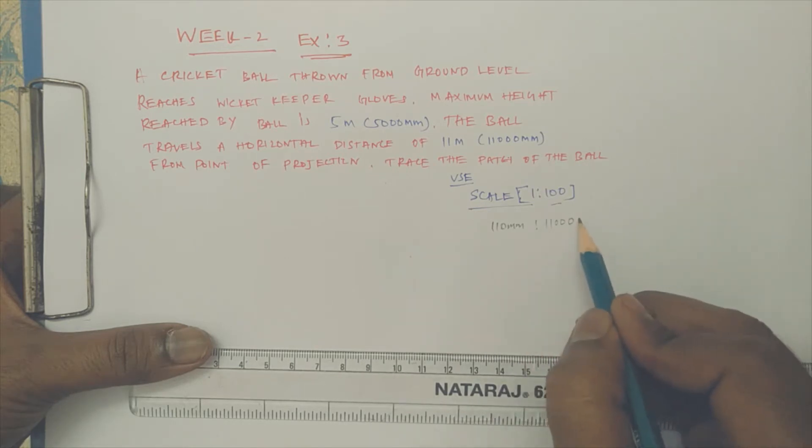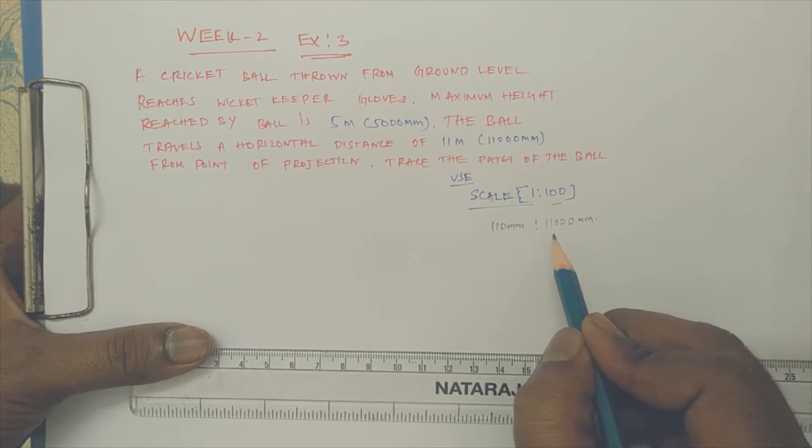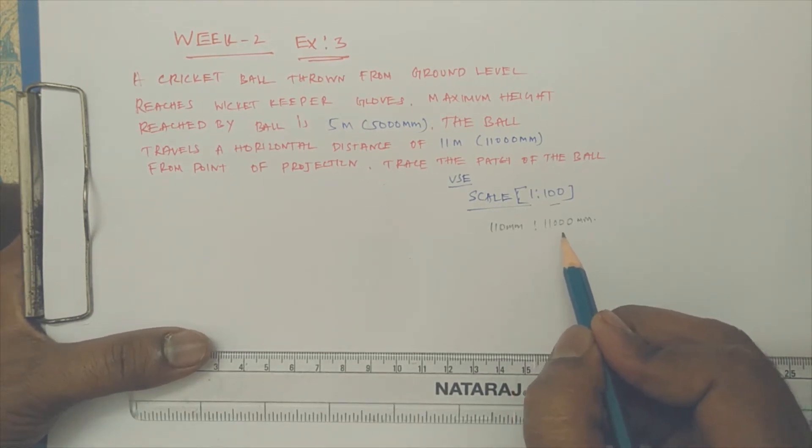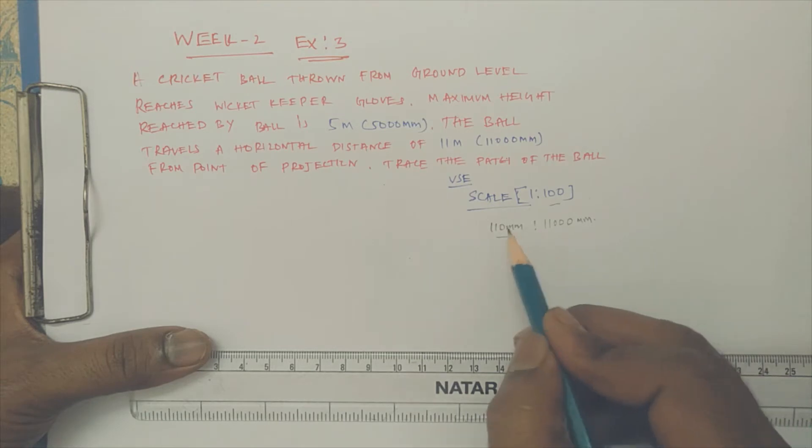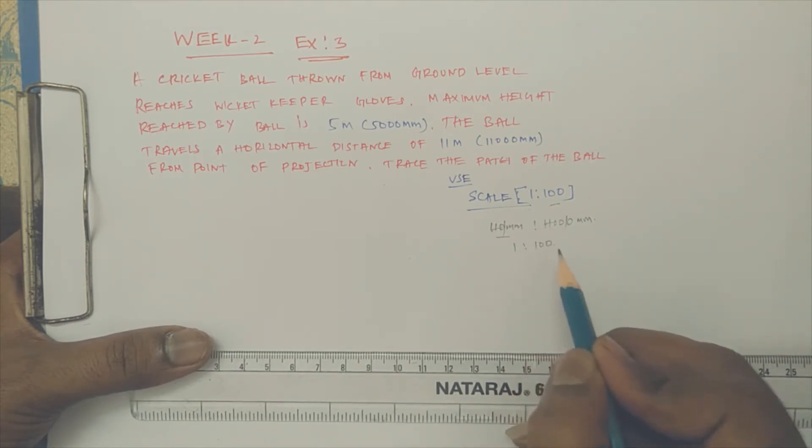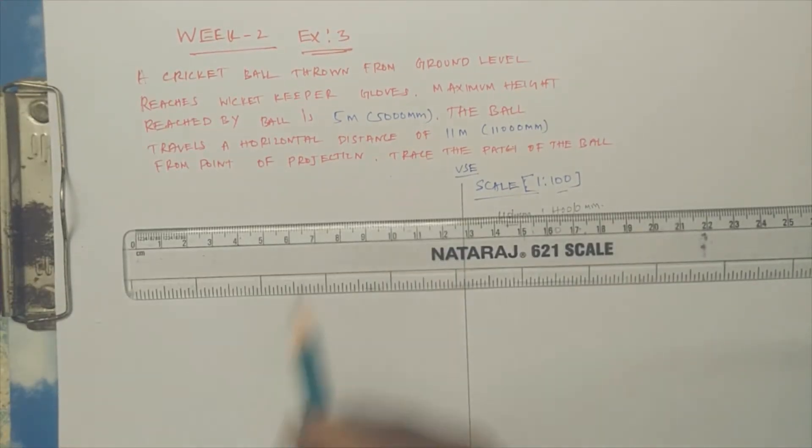So if I am using that, 5000 is the height and 11,000 mm is the horizontal length. For convenience, instead of 11,000 mm, I'm using 110 mm. It is possible to use 11 centimeters on an A4 sheet. We can simplify this as a ratio of 1 to 100, so every 100 mm you are drawing as 1 mm.